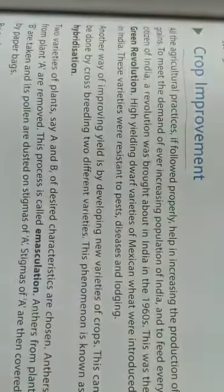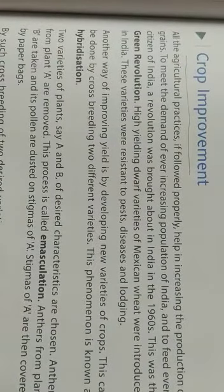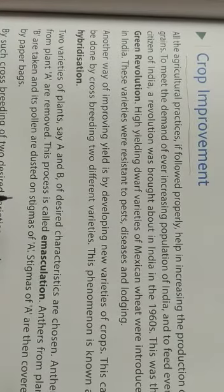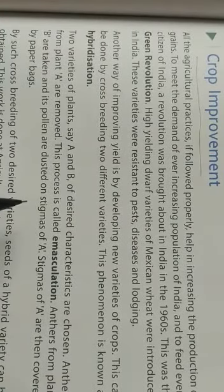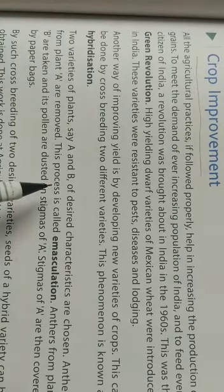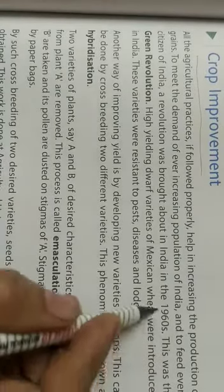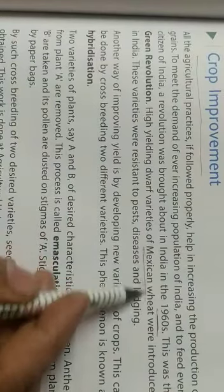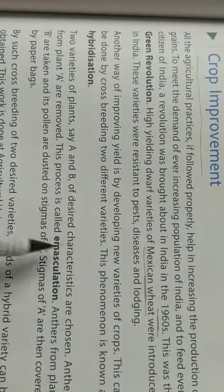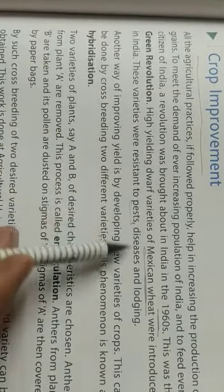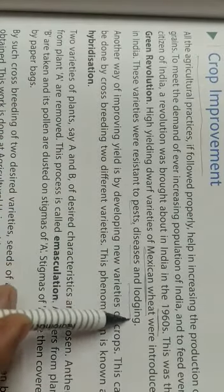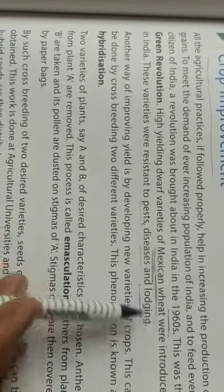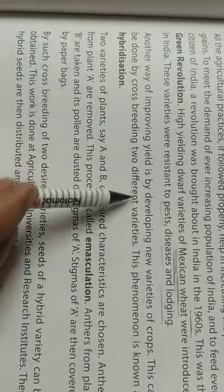After that: crop improvement. Following all agricultural practices properly helps in increasing the production of grains to meet the demand of India's ever-increasing population. To feed every citizen, a revolution was brought in India in 1960 called the Green Revolution. High-yielding varieties of Mexican wheat were introduced, which showed resistance to pests and disease and gave very high yields.